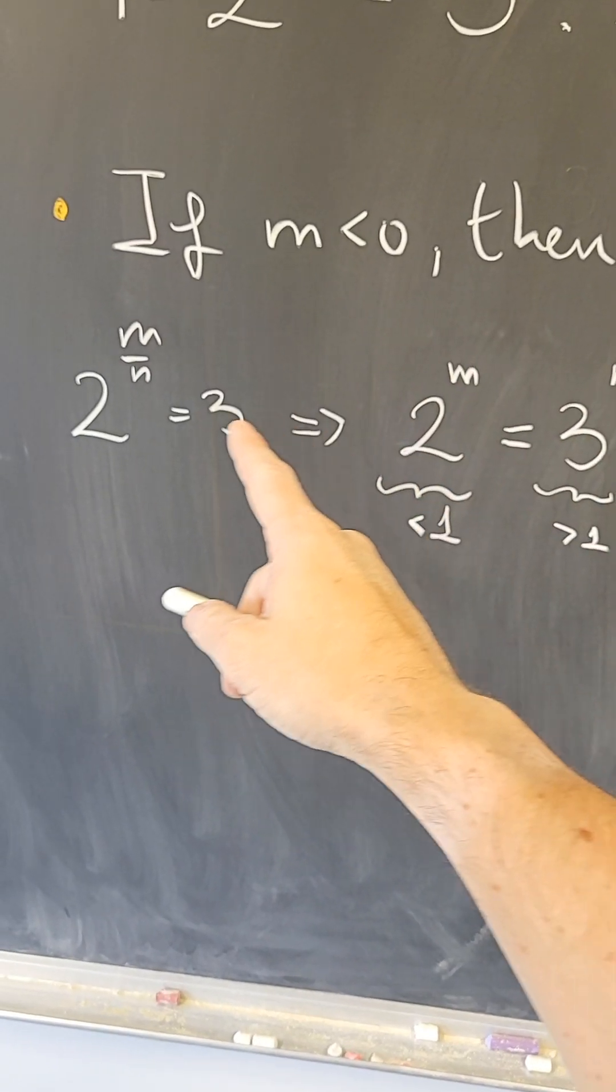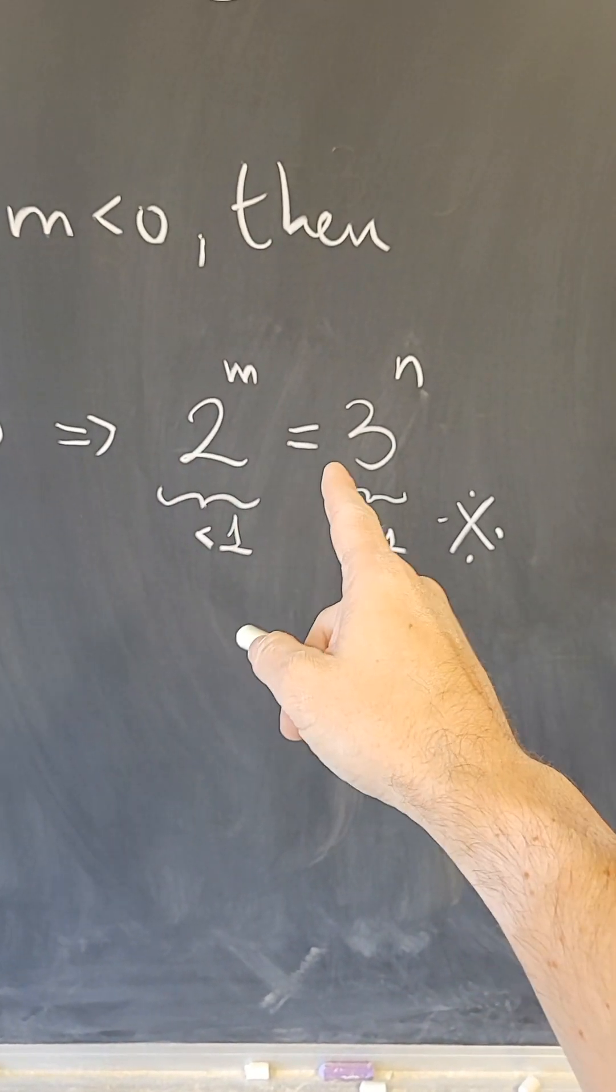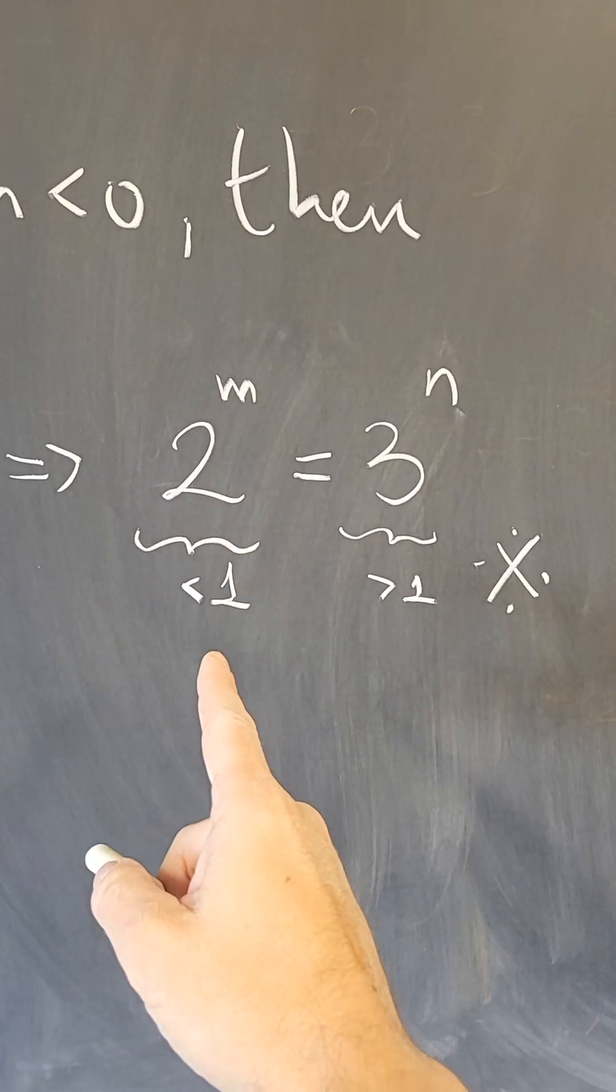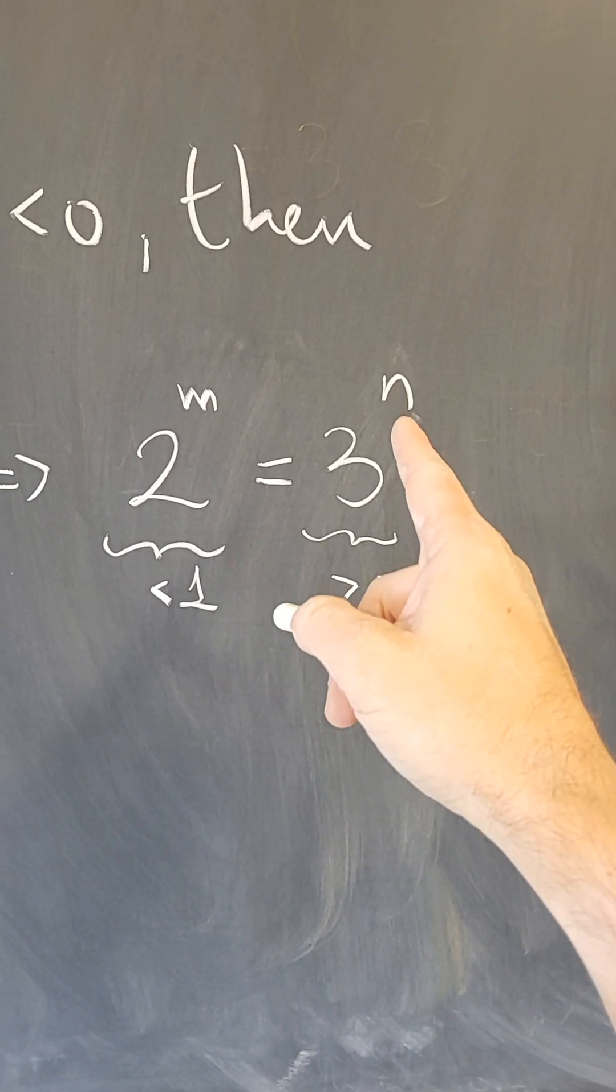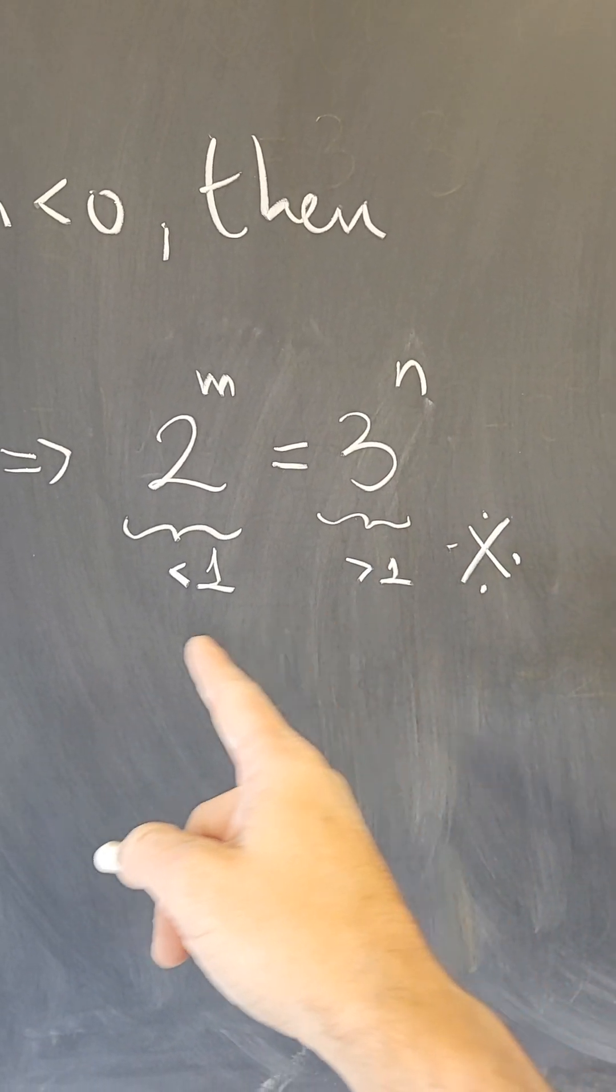If m is negative, then this equation simplifies to 2^m = 3^n. But if m is negative, 2^m is less than 1, while if n is a positive integer, 3^n is greater than 1. Contradiction.